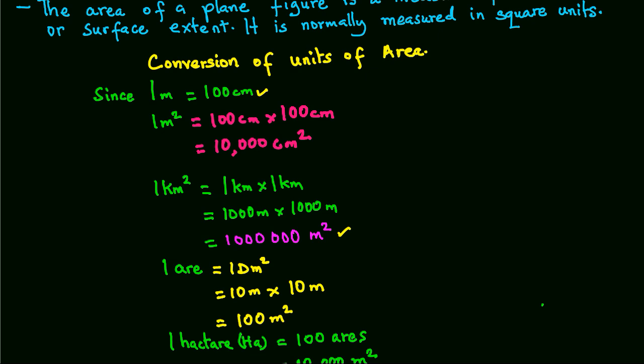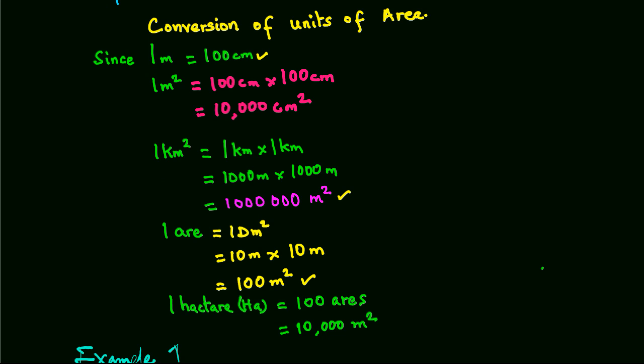1 are, which is equals to 10 meters squared, will be equals to 100 square meters. And 1 hectare, which is equal to 100 ares, will be equals to 10,000 square meters.